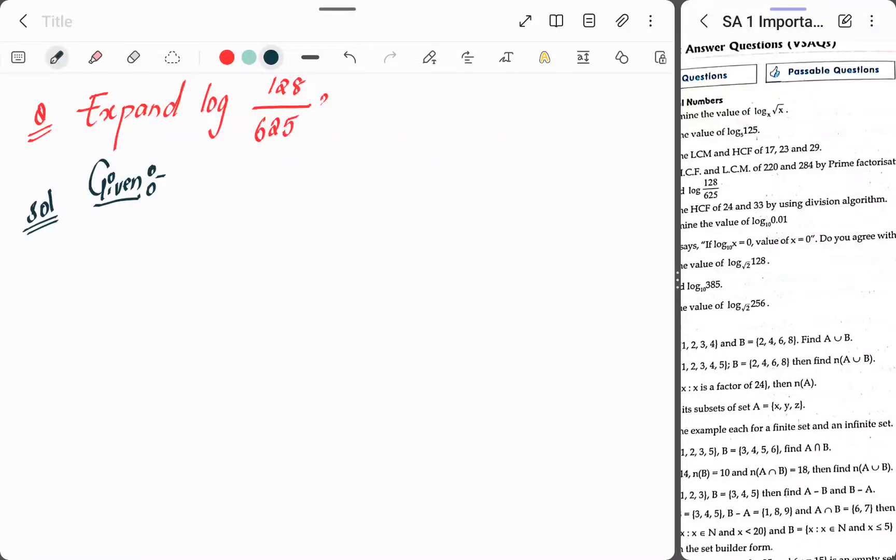The next question is: expand log 128 by 625. So first, write the given log 128 by 625.